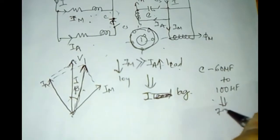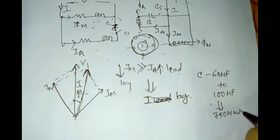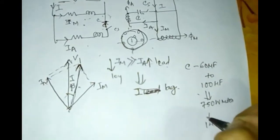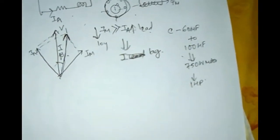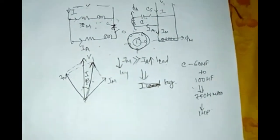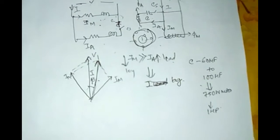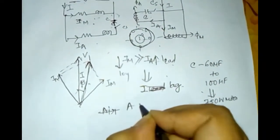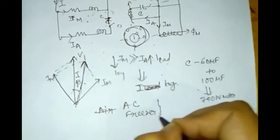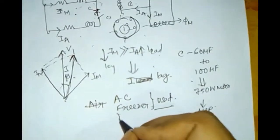The capacitor value varies from 60 microfarads to 100 microfarads for a 750-watt motor, which is equivalent to 1 HP. AC electrolytic capacitors are more economical and preferred, but the motor should not be started too frequently, otherwise the electrolytic capacitor may overheat or get damaged. Since the motor has high starting torque, it is used for refrigeration, air conditioning, freezers, and reciprocating pumps.